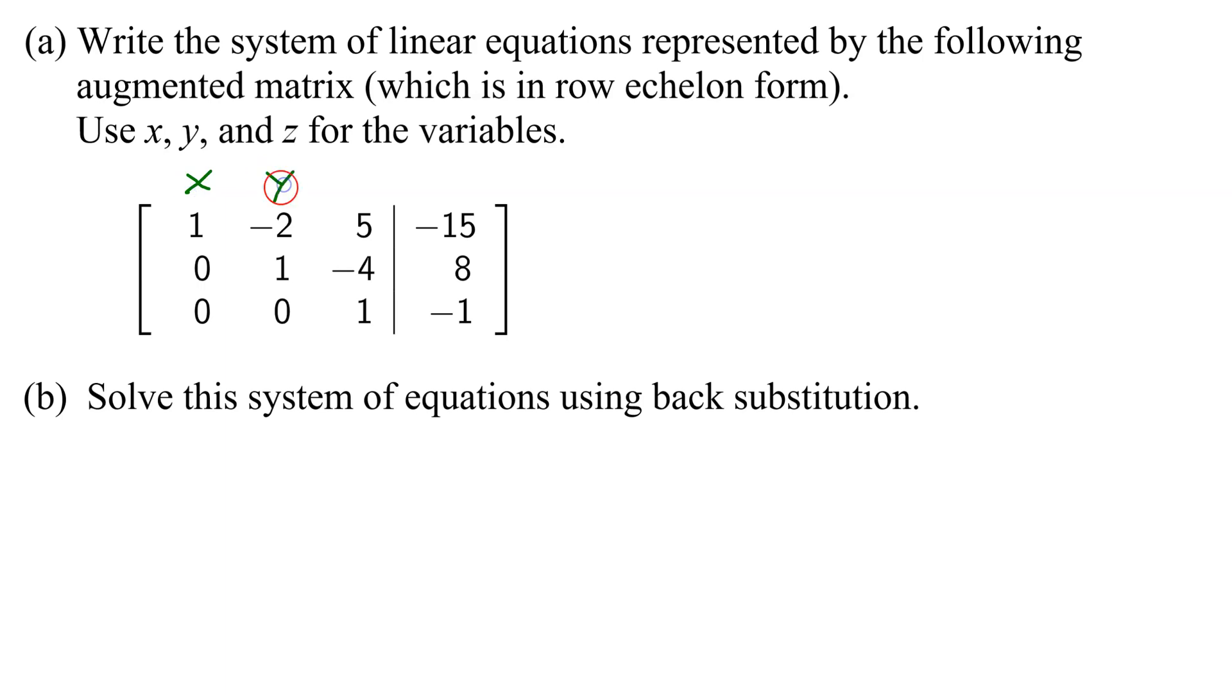We were told to use the variables x, y, and z. So row 1 tells us that 1x, or just plain old x, minus 2y, plus 5z, equals negative 15.